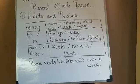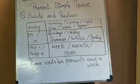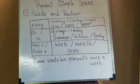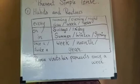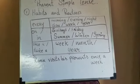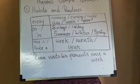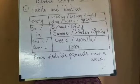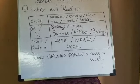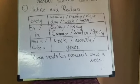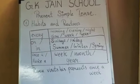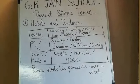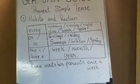Time expressions that indicate habits and routines include: every morning, every night, every day, every week, every year. Also: on Sundays, on Friday, in summer, in winter, in spring. And: once a week, once a month, twice a week, twice a year. These express that the action takes place habitually. Example: 'Ramu visits his parents once a week.'